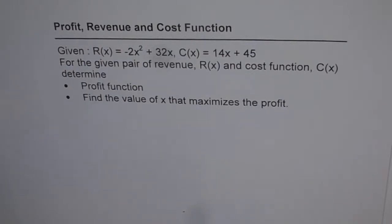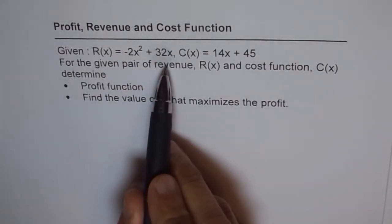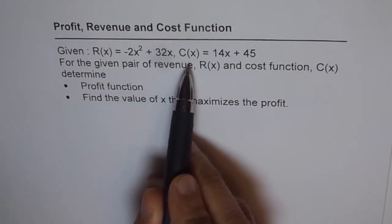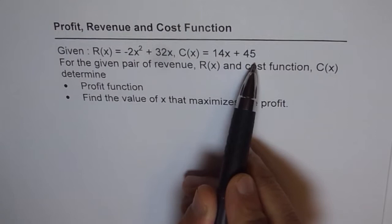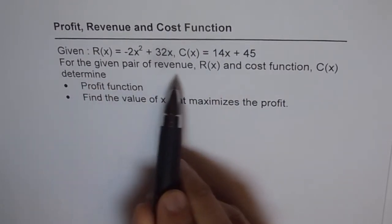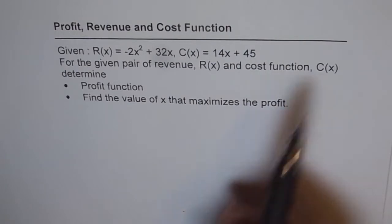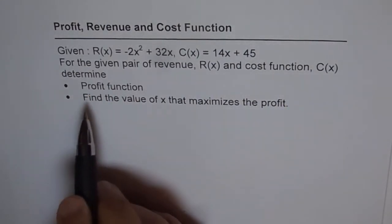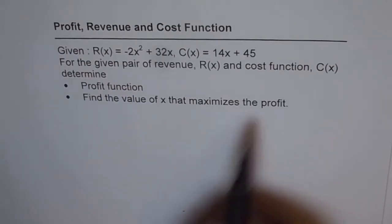Let us understand the relation between profit, revenue and cost function. Given revenue function as -2x² + 32x, cost function C(x) as equal to 14x + 45. For the given pair of revenue R(x) and cost function C(x), determine profit function. And part 2 is, find the value of x that maximizes the profit.